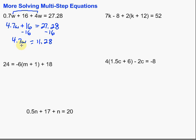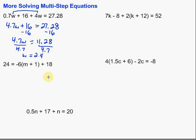Then finally, we want to get that w by itself. It's being multiplied by 4.7, so to get rid of that we do the opposite. The opposite of multiplication is division. We divide by 4.7 on both sides, and the 4.7s cancel out, giving us w equals 2.4. Remember, we can always check that by putting 2.4 back in for w in both spots in our equation, and it should work out — I'll leave that to you.